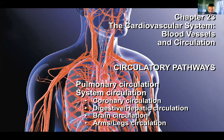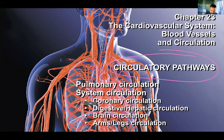Welcome back. We are continuing Chapter 23, Cardiovascular Systems, specifically the notes on circulatory pathways. We've already gone over pulmonary, coronary, digestive, and hepatic circulation. Right now we're going over circulation to the brain.